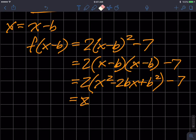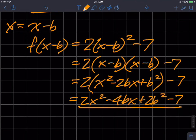Oops, I held it down too long. Let's clean that up a little bit. So 2x squared minus 4bx plus 2b squared minus 7. I have no like terms, so I'm done.